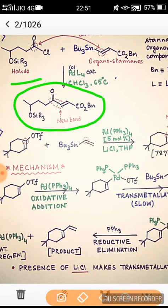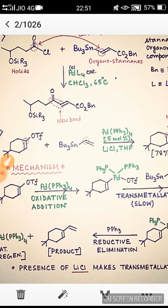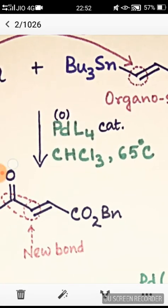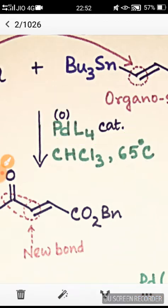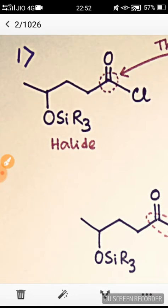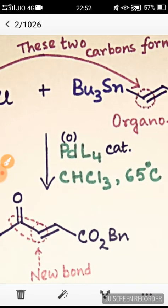This is our halide and this is our organostannane. It reacts to form this bond. But without the presence of this palladium as catalyst, nothing will happen. This palladium helps to cross-couple these two products. This organotin and this halide, or it may well be a triflate, and the organotin compound is cross-coupled in the presence of this palladium catalyst.